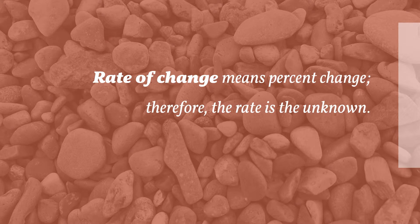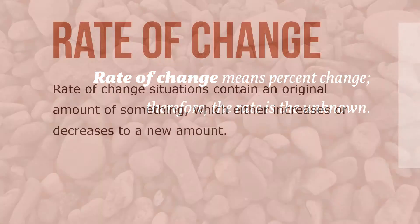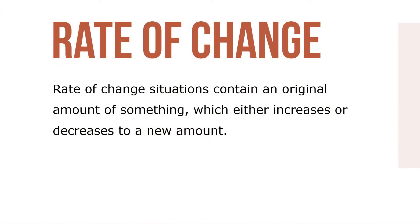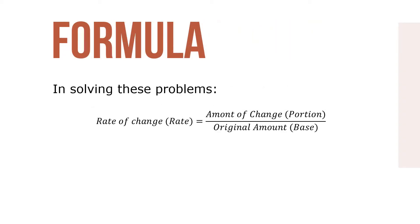Rate of change means percent change. Therefore, the rate is the unknown. Rate of change situations contain an original amount of something which either increases or decreases to a new amount. Once again, we use the formula: rate equals portion divided by base. In solving these problems, the original amount is always the base, the amount of change is the portion, and the unknown — which describes the percent change between the two amounts — is the rate.